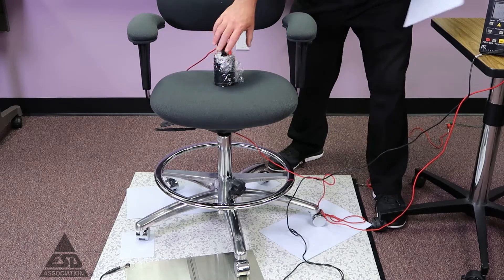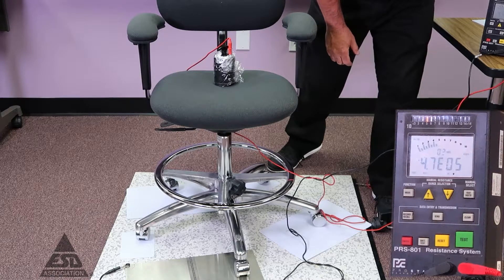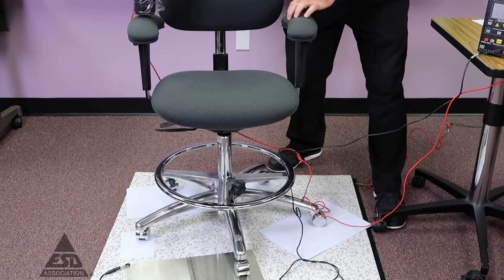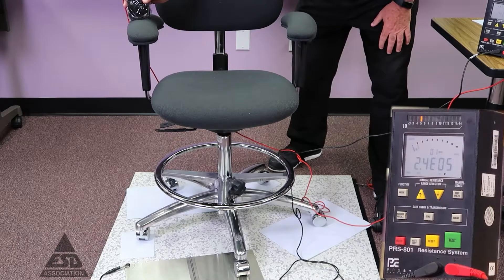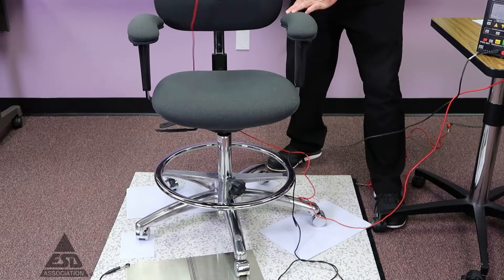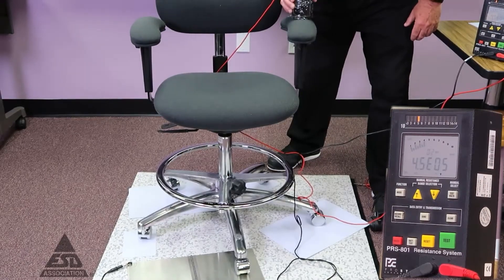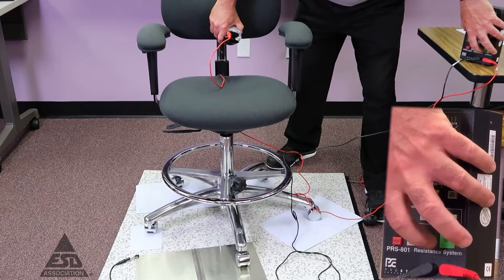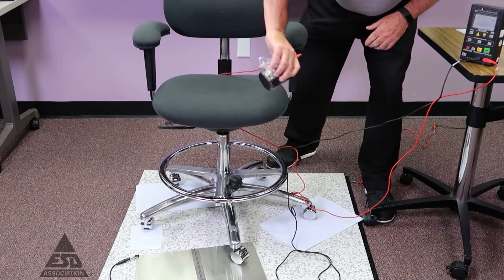The first measurement we want to make is simply through the seat, and it meets our requirements. Next both arms, now the back, and finally the chair rail. All of them are well within spec.